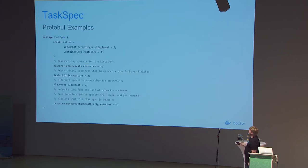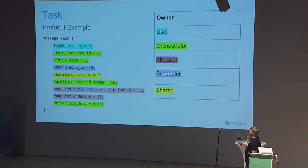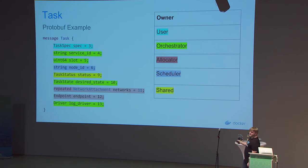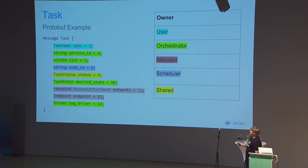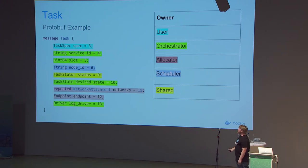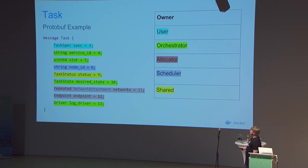This is the task spec, part of the service definition. The user owns the task spec — once you take in a task spec, we never touch it inside the orchestrator. You could sign that, or compare it with what you're actually doing. Fields in green are owned by the orchestrator: it can allocate slot IDs, service IDs, and set desired task state. An allocator owns the network portion.